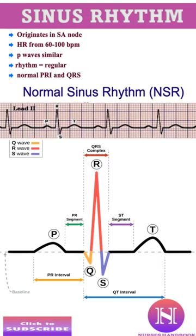What are the characteristics of a normal sinus rhythm? It should have a correctly oriented P-wave. Not only that, but every P-wave should be followed by a QRS complex and the T-wave. The heartbeat should be between 60 to 100 beats per minute in an adult with a regular heart rhythm.